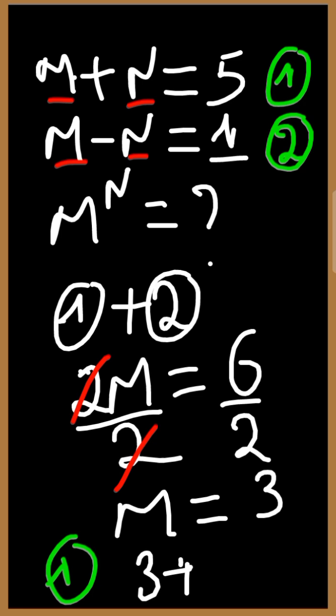We are going to transfer 3 to the right hand side. This will give us N equal to 5 minus 3, which is equal to 2. This is the value of N.